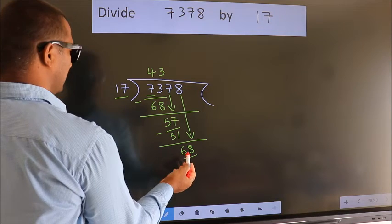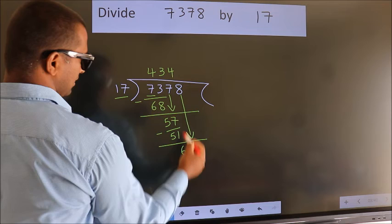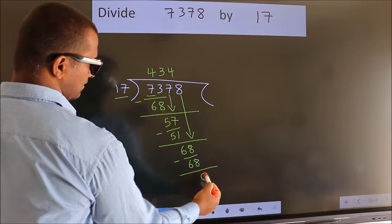When do we get 68 in the 17 table? 17 fours, 68. Now we subtract. We get 0.